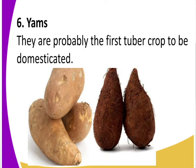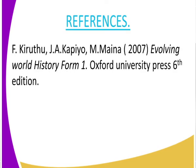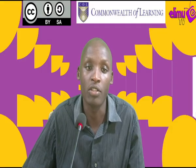Class, we have looked at a number of crops that were domesticated: yams, maize, millet, barley, and wheat. Those are some of the crops domesticated by man. Now, can you try this assignment: what were the earliest crops to be domesticated? We have stated a few, but there are many more. Using your reference book — Evolving World History, Form One — get to name those other crops that were domesticated by man.